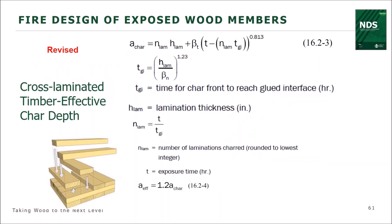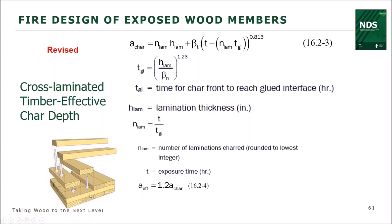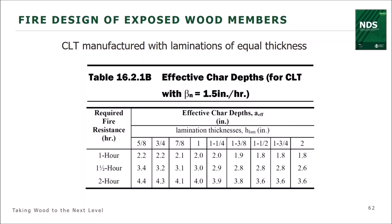Chapter 16 provides an equation for calculating char depth: A-char and A-effective, where A-effective is the depth used for structural calculations. A table applies only to CLT with equal lamination thicknesses. For example, calculating for two hours of fire resistance with 1-3/8-inch laminations, we'd need to build 3.8 inches into the CLT. Then we use that to determine the structural capacity of our cross-laminated timber. A similar table exists for sawn lumber, structural glue-laminated timber, and structural composite lumber.